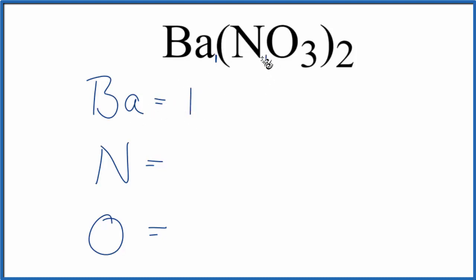But this subscript outside of the parentheses applies to everything in the parentheses. So we have 2 times 1 gives us 2 nitrogen atoms. 2 times 3 gives us 6 oxygen atoms.